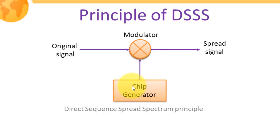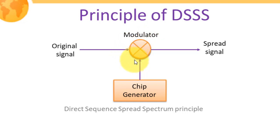The chip generator uses a PN random sequence generator to expand the spectrum. A chip is a mini bit whose bit duration is very much less in comparison to the original data bit — that is why we call it a chip. The chip is directly multiplied with our original bit, and due to this product operation our signal bandwidth gets expanded. Since we are directly applying the chipping sequence to our original signal, we call it a direct sequence spread spectrum system.